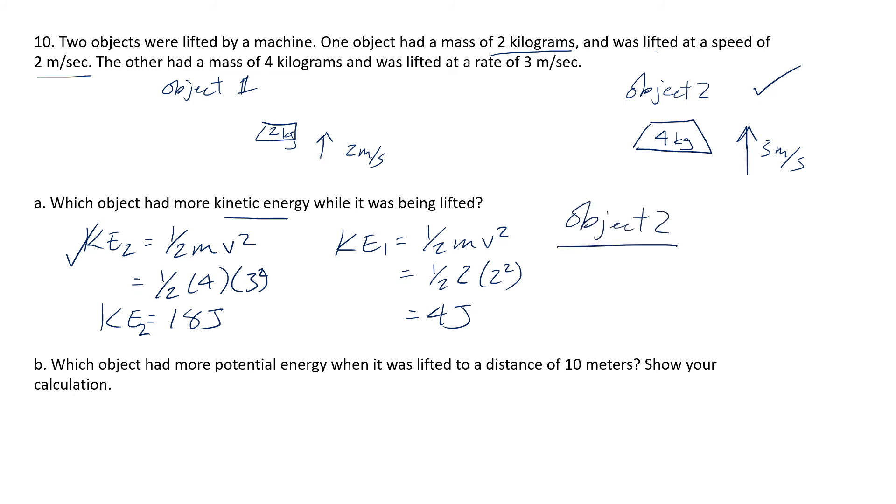All right let's do b. Which object has more potential energy when it was lifted to a distance of 10 meters? And here's where a lot of you made a mistake where you think object one is the answer for one of them so like object two was the answer for the first one so it must be object one. Not really. Look they both have the same height. The height is 10 meters. So really the only thing that matters is the mass. So which one's more massive? It's object two again. I will show you.